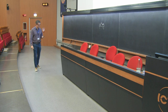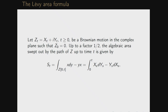The formula for this functional is given by the integral of the area form in the complex plane, which is x dy minus y dx, along the path of the two-dimensional Brownian motion. If the Brownian motion had smooth paths, then by Stokes' theorem — given that the exterior derivative of x dy minus y dx is 2 dx dy — you compute exactly the area swept out by the path up to time t.